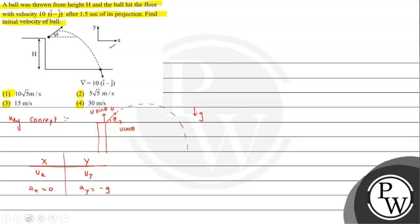So we can do now for the question given. Let's suppose the initial velocity is u. This component is u of x, and this component is u of y.